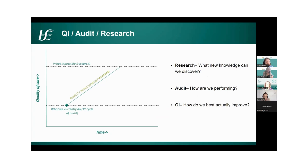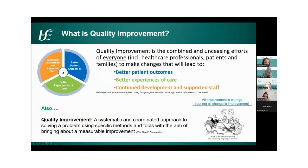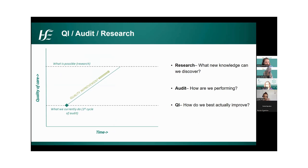A lot of times we get asked: what's the difference between quality improvement and audit, or quality improvement and research? It really helps to know the difference so you don't end up going down the wrong track. Research helps us to define what is possible. Audit tells us how we're currently performing, usually against a standard or guideline. And quality improvement is the process of moving from how we are performing towards what is possible and beyond - to infinity and beyond with quality improvement.